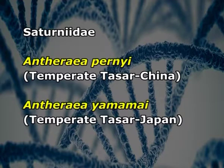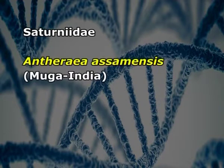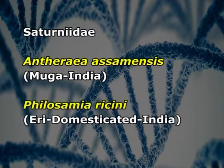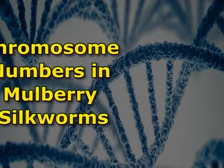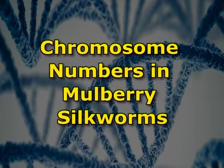Antheraea yamamai is the temperate tasar of Japan. Antheraea assamensis is the muga silkworm, and Philosamia ricini is the eri silkworm, which is also a domesticated silkworm in India. Philosamia cynthia is an eri wild silkworm found in the family Saturniidae. Next, we will see the chromosome number in the mulberry silkworms.